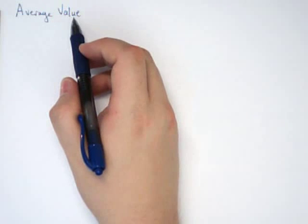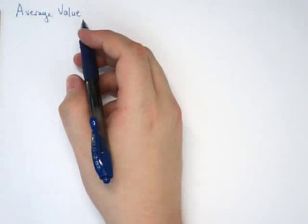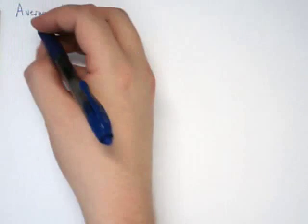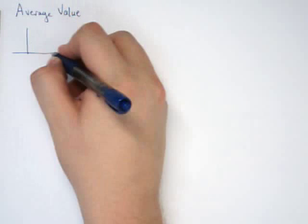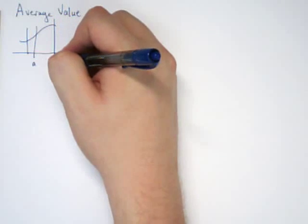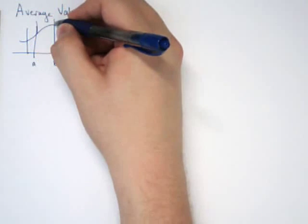In this screencast, we're going to look at average value and its relationship to centroids and average temperature. The idea is we're going to go back to first semester calculus, and we're going to take a function on an interval A to B, and I want to know the average value.